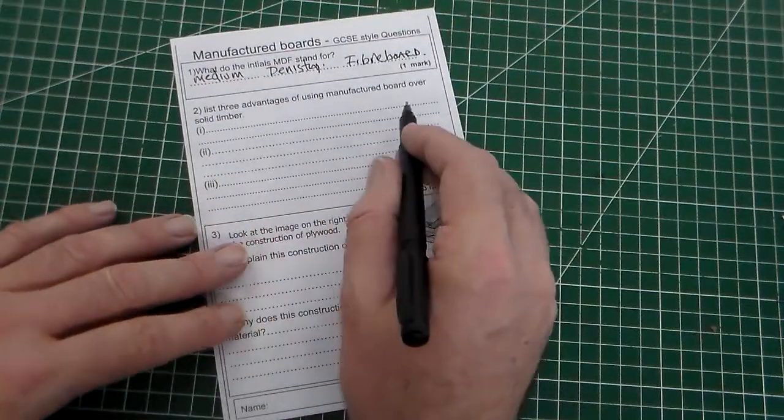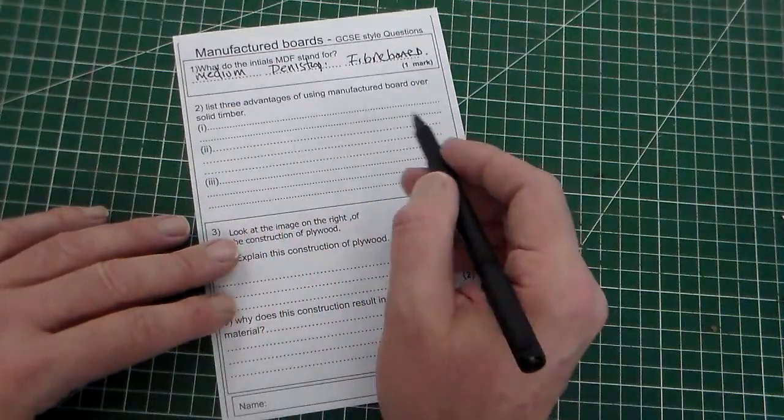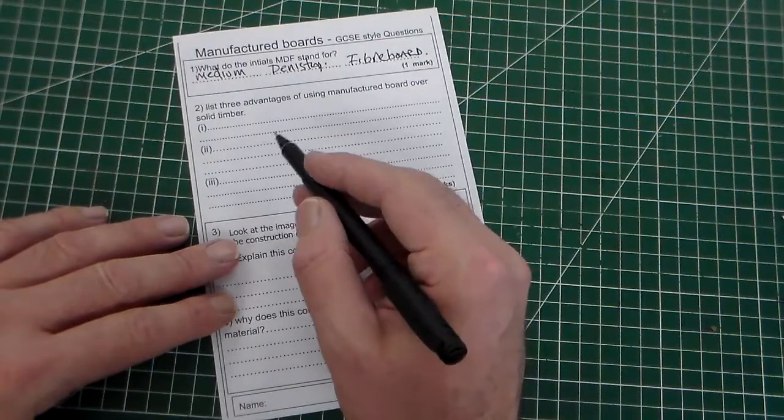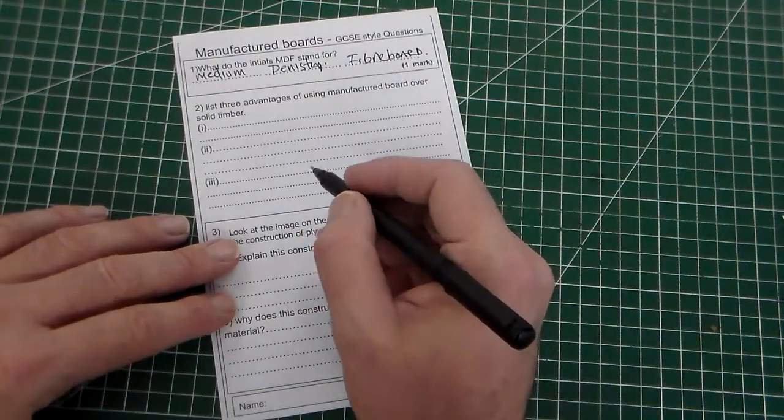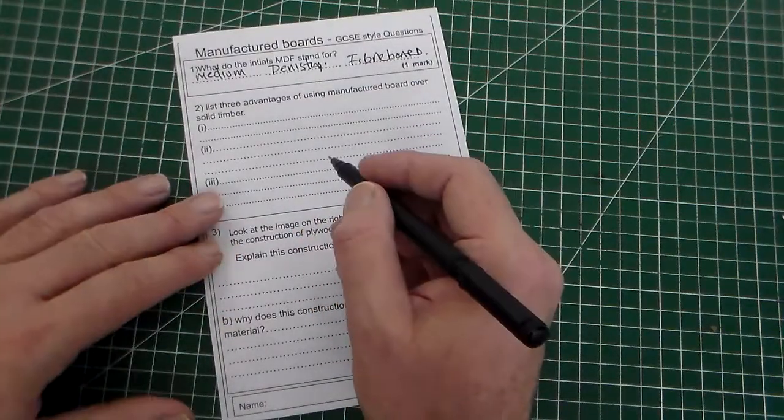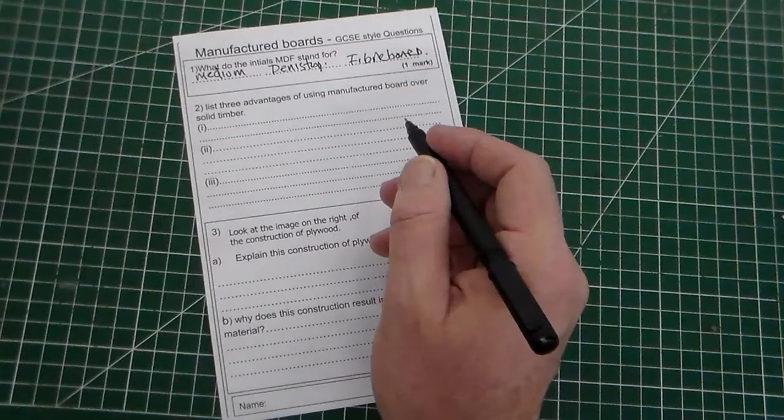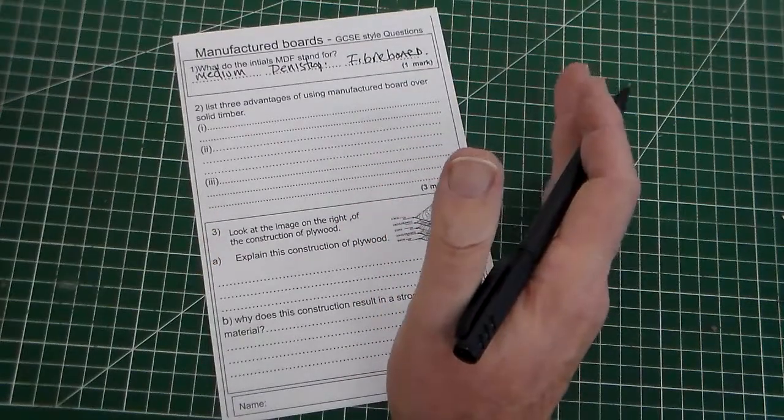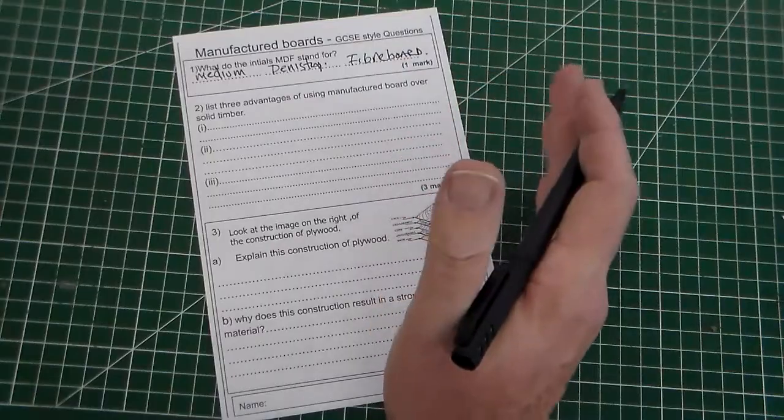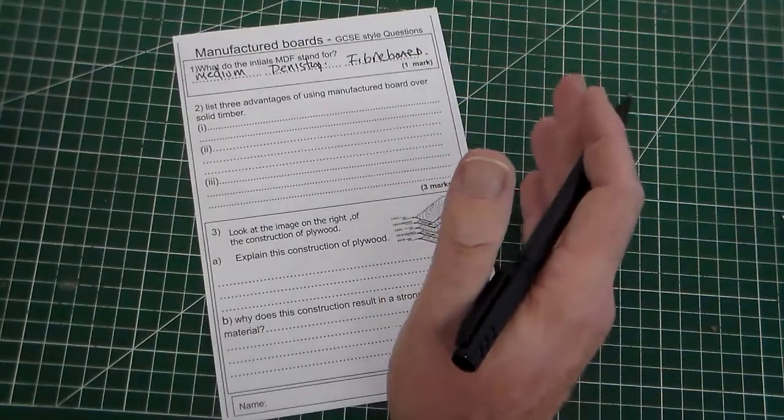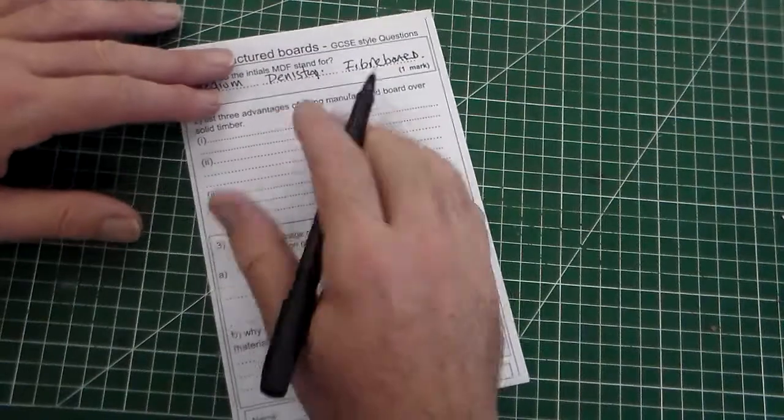Okay, list the advantage of using manufactured board over solid timber. So, this question is saying if you had square meter for square meter, you were using MDF or plywood instead of solid wood, what would be the advantages?